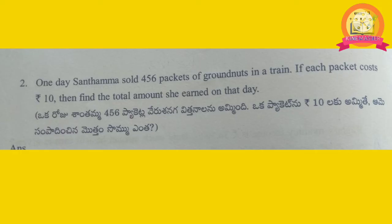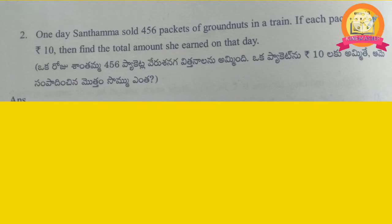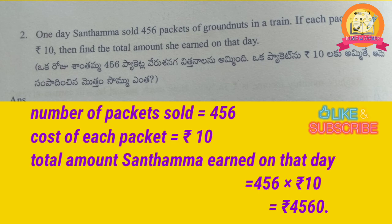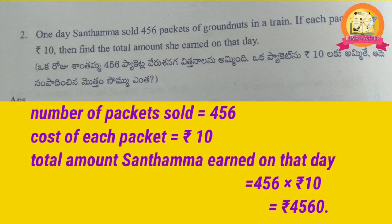Second problem: One day, Santamma sold 456 packets of groundnuts in a train. If each packet costs 10 rupees, find the total amount she earned. Solution: number of packets sold is 456, cost of each packet is 10 rupees. Total amount: 456 multiplied with 10 gives 4,560 rupees. Therefore, total amount Santamma earned on that day is 4,560 rupees.